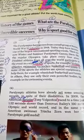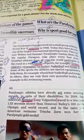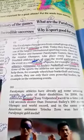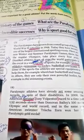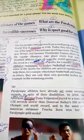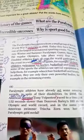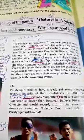In some of the sports, the athletes use special equipment to help them. For example, wheelchair basketball and tennis. In others, they use only their own powerful bodies, for example, in the swimming events.